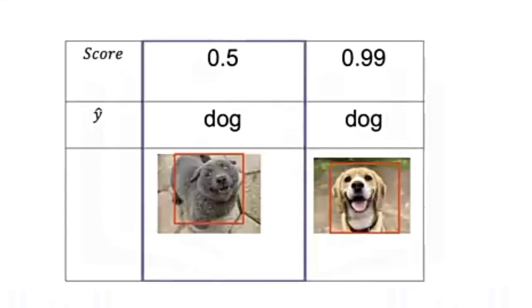For the first row, we see the prediction is dog, but the image does not look like a dog. As a result, the score is low, 0.5. This means the model is not confident about its prediction.